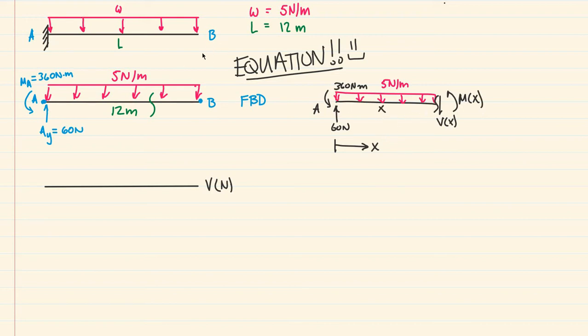Since this beam is in static equilibrium, every portion of that beam should also be in static equilibrium. We can use our equations of equilibrium for this portion of the beam and come up with what our shear is going to be in equation form.